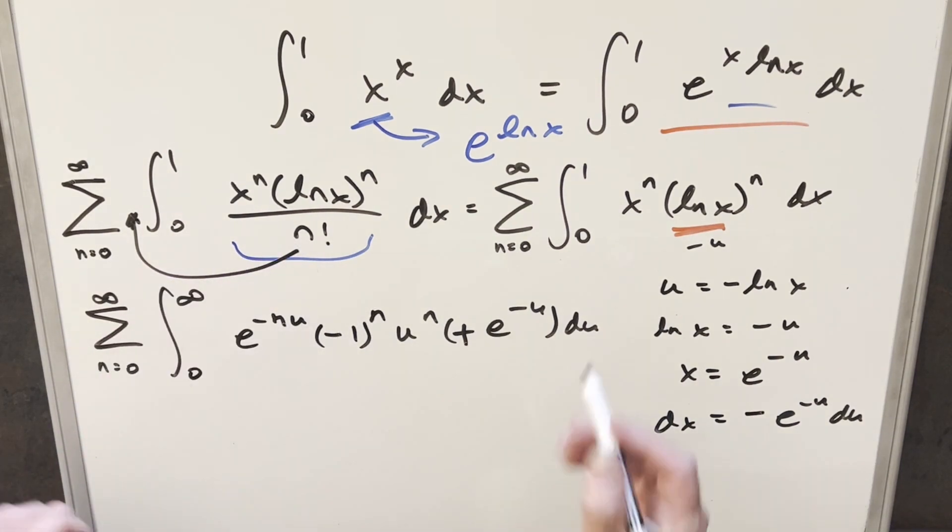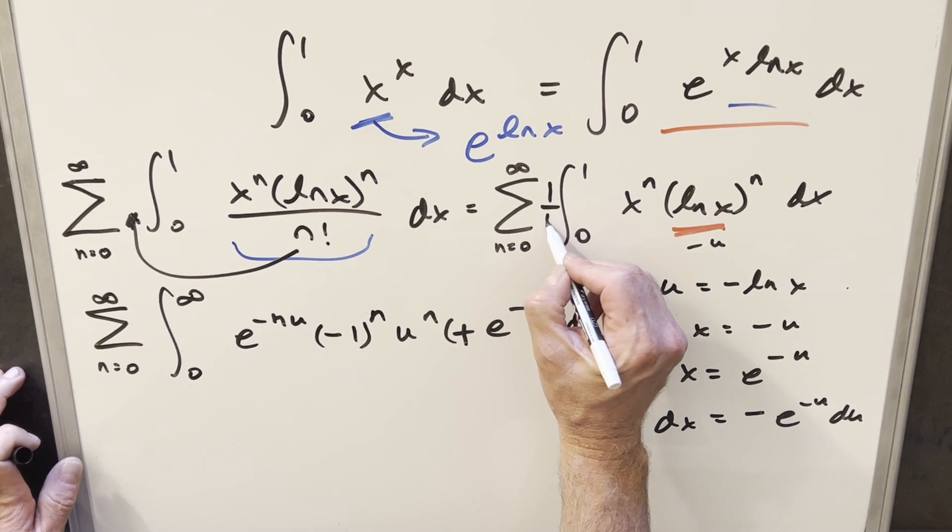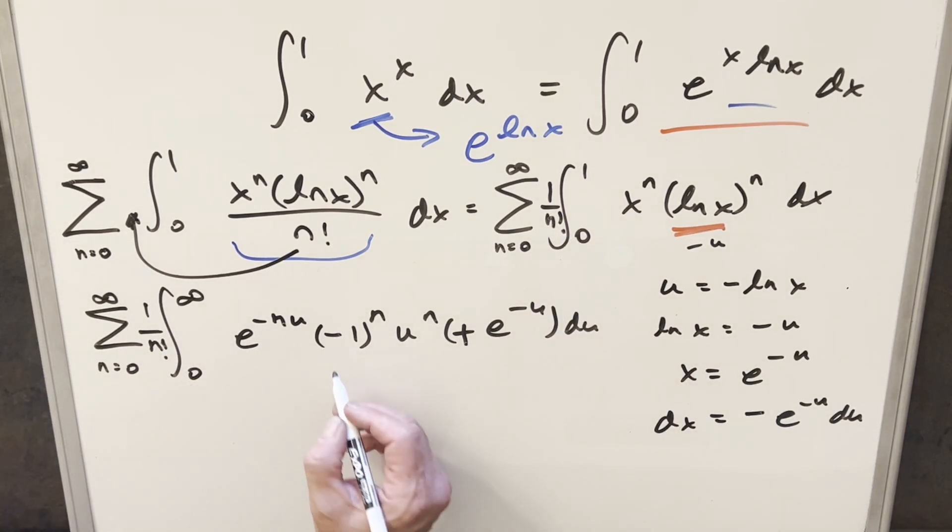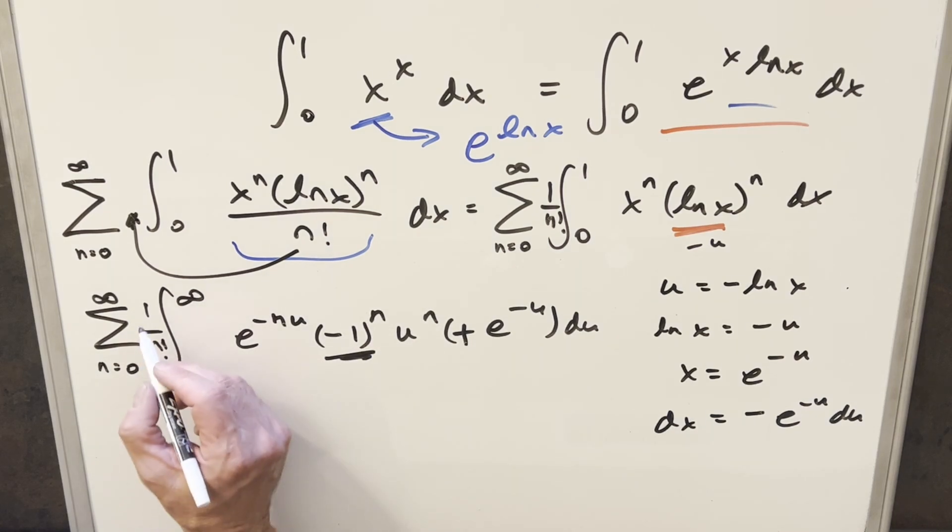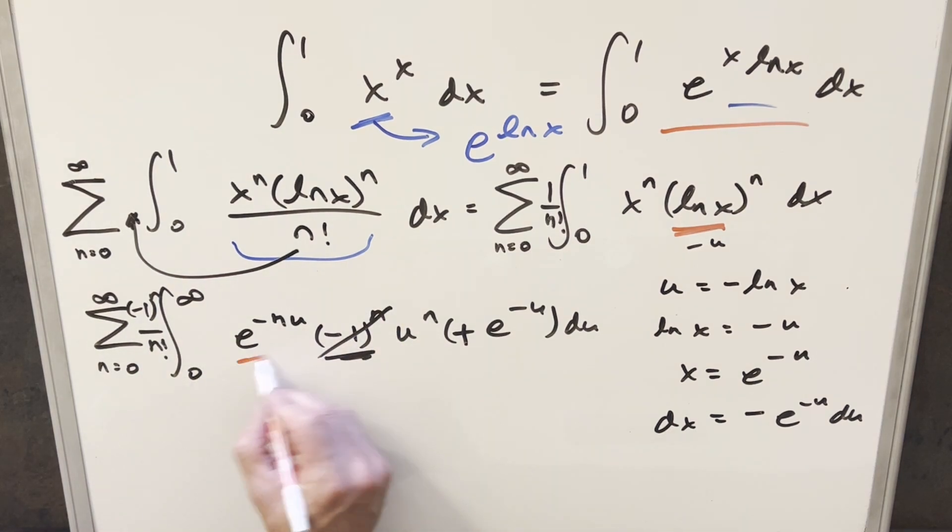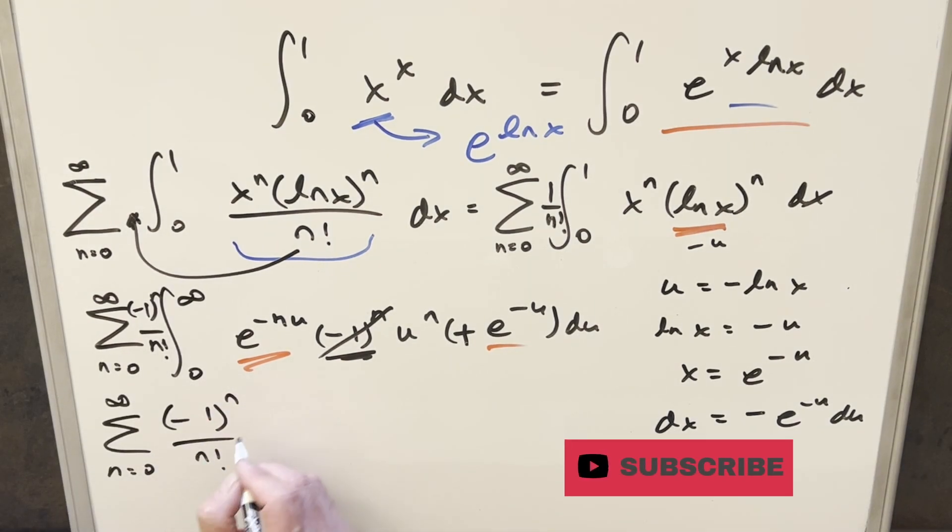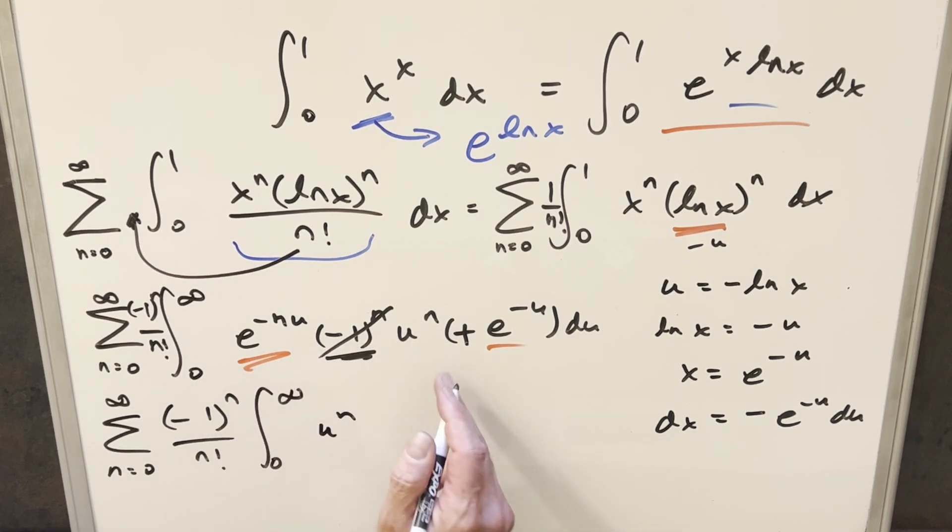And now I'm realizing I forgot this n factorial that I brought out, should be 1 over n factorial there. Now this minus 1 to the n, that's also a constant, so I can bring that out front. We'll bring that in right there. But then cleaning this up, we've got the same base here, so I can combine those together in one term. In front, we're going to have this minus 1 to the n over n factorial. And then I'll have this u to the n here. Then putting these together, I can write this as e to the minus (n plus 1) times u du.